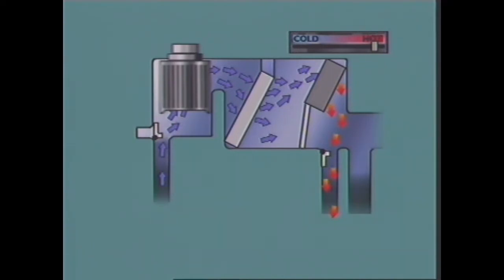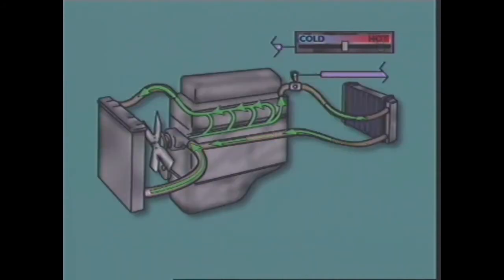When the engine is at normal operating temperature, some of the heat in the heater fins is transferred to the air passing over them. The heated air can then be directed to raise the temperature in the passenger compartment. Moving the lever to a cooler setting reduces the valve opening, restricting the amount of coolant flowing through the heater core, so less heat is transferred to the air passing over the heater core fins.